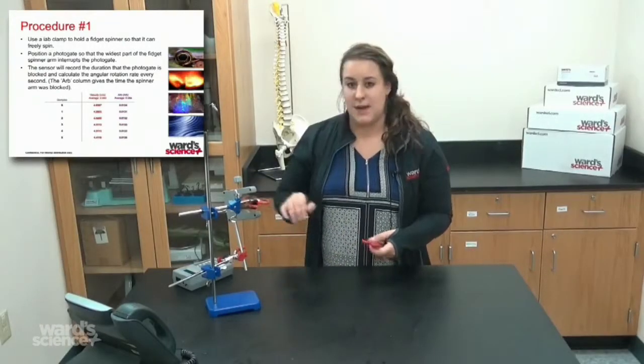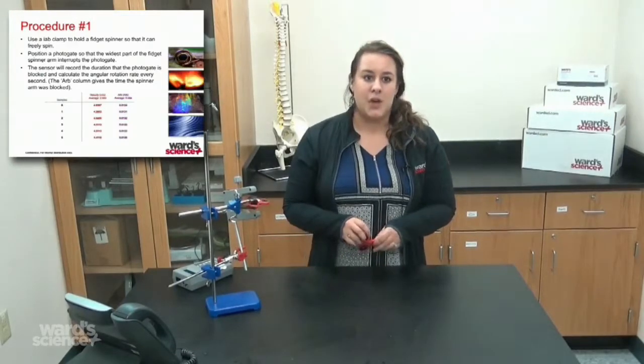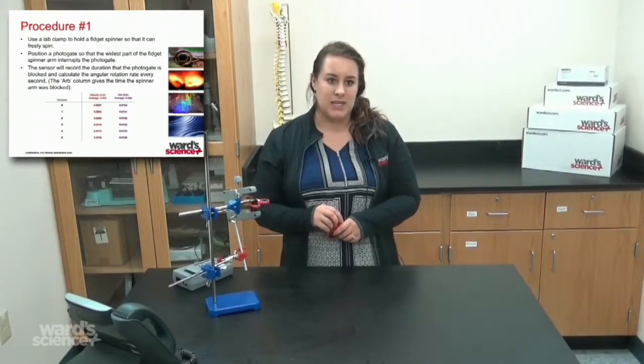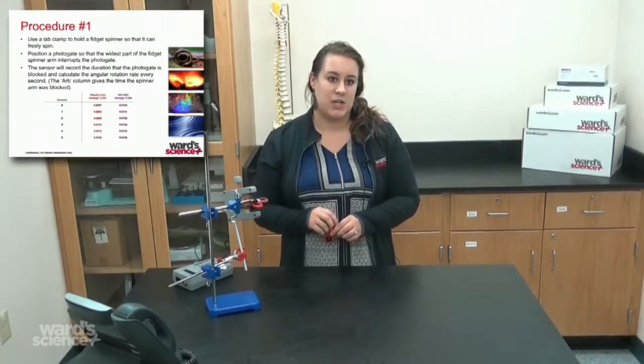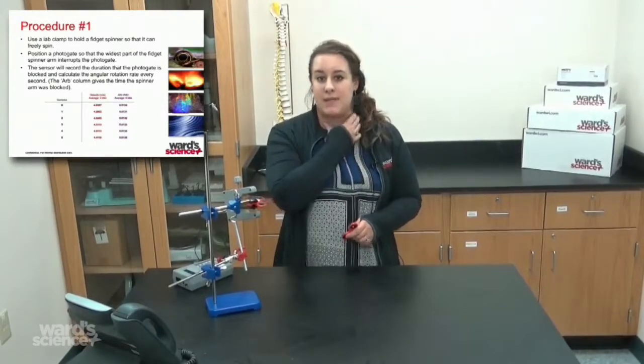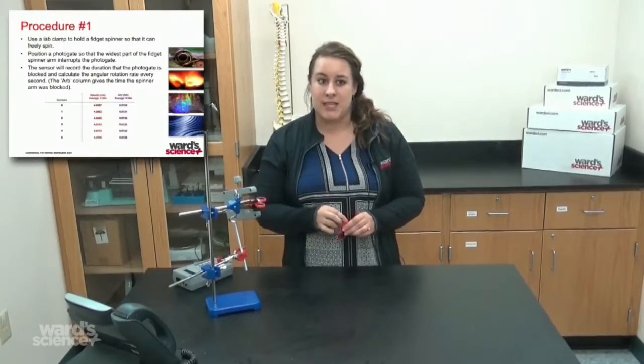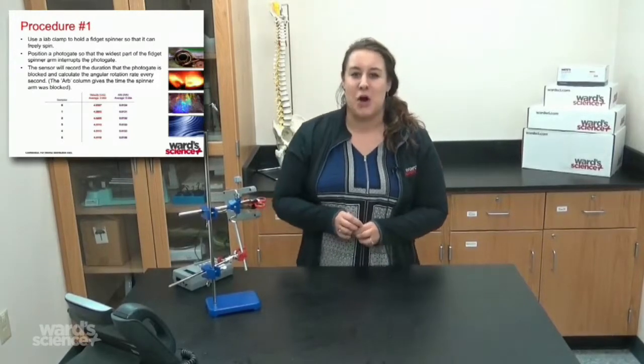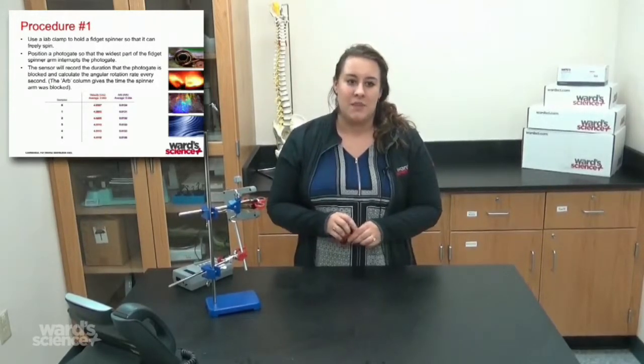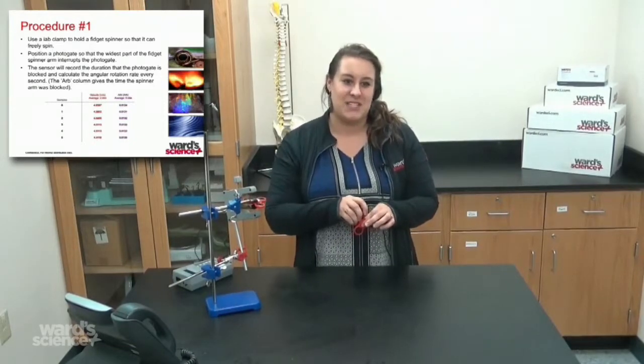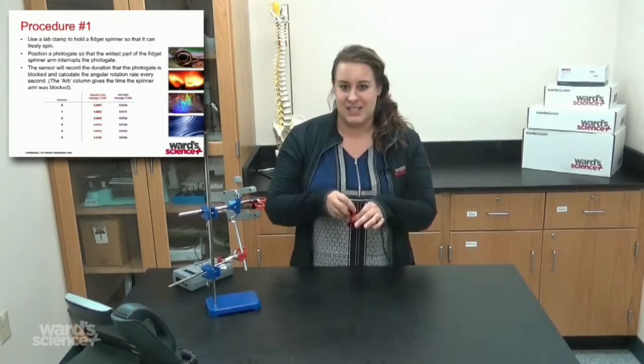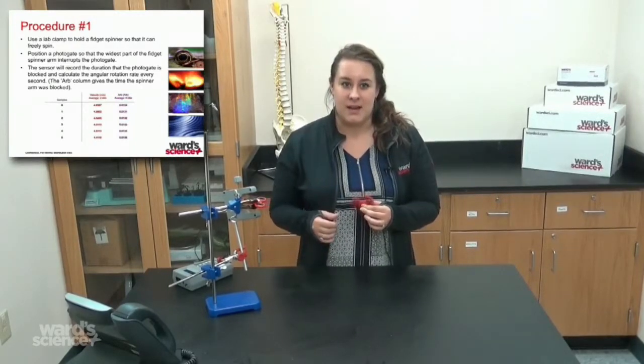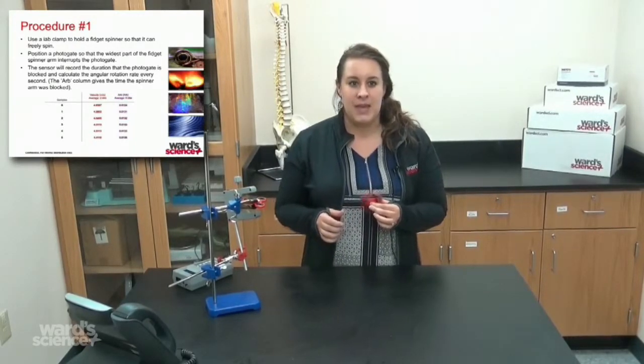The sensor will record the duration that the photo gate is blocked and calculate the angular rotation rate every second. I did include sample data on your screen if you wanted to take a look at that. The ARB column—it reminds me of Arby's—will give the time the spinner arm was blocked. I will talk a little bit more about that sample data on the next slide.